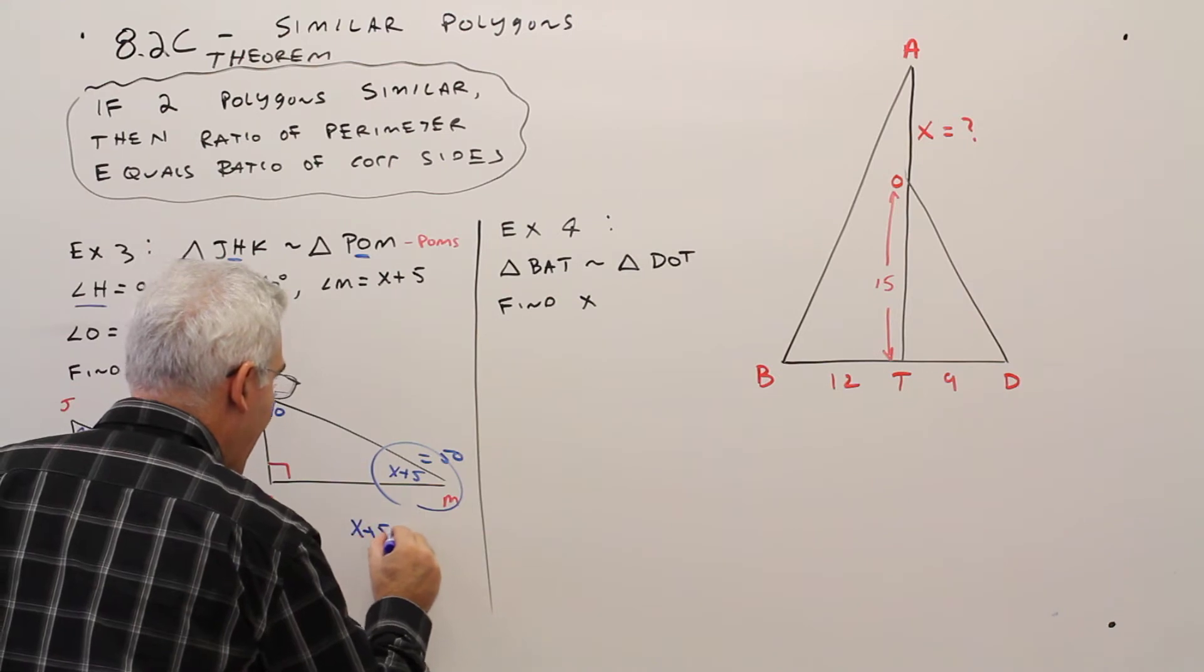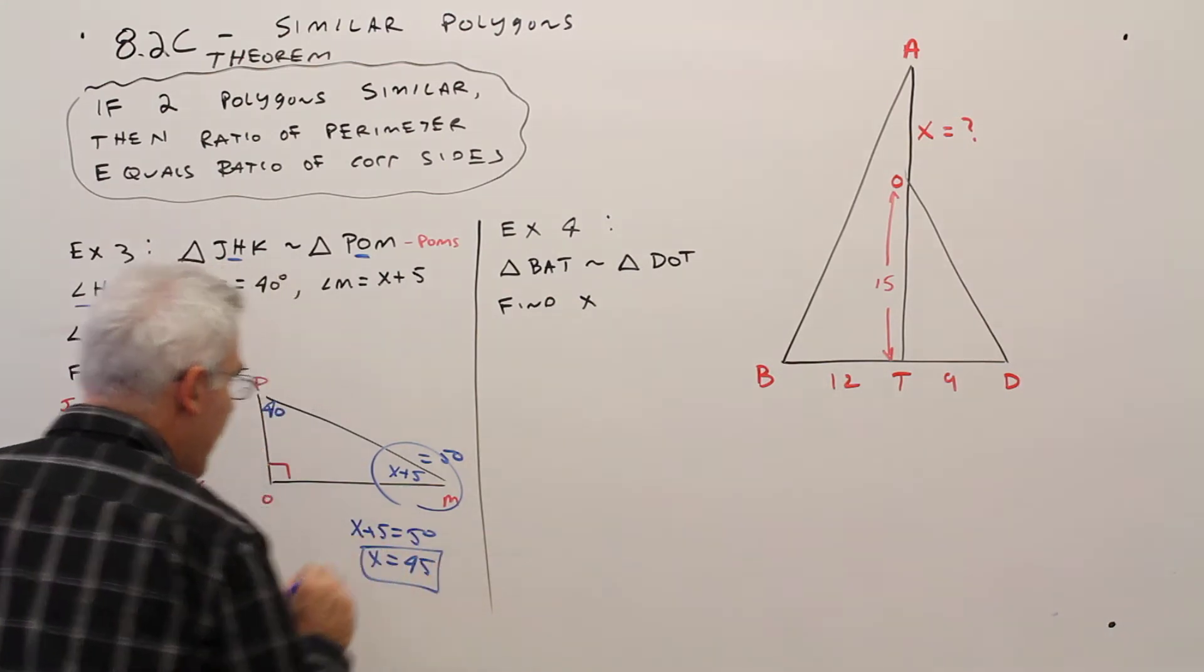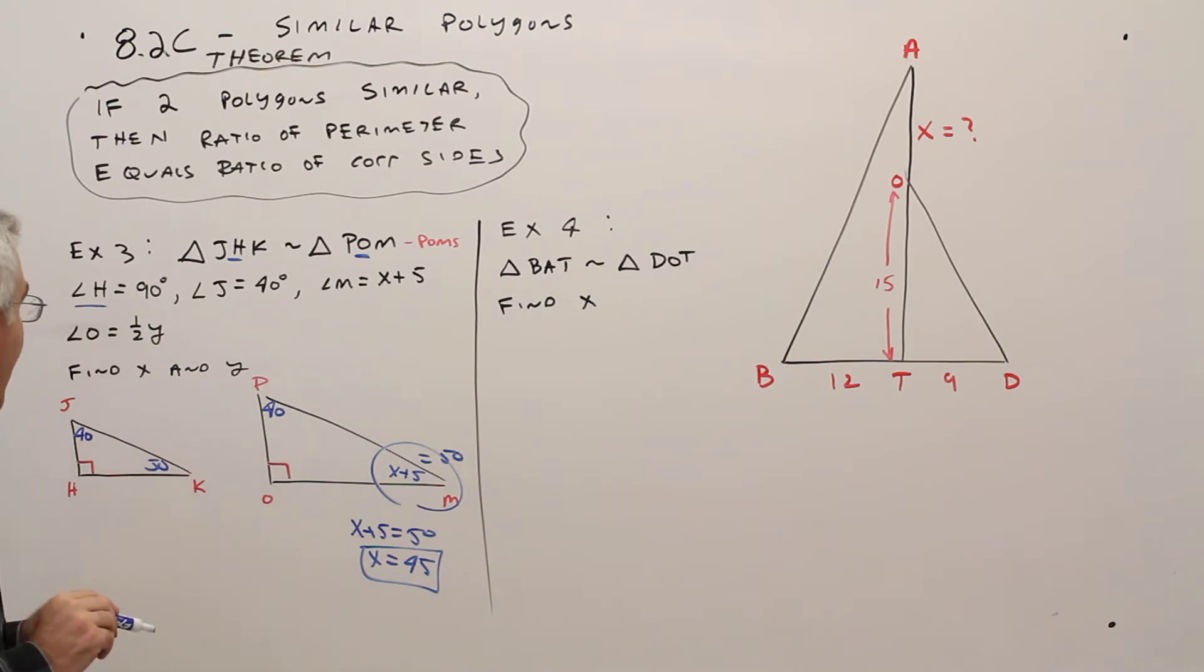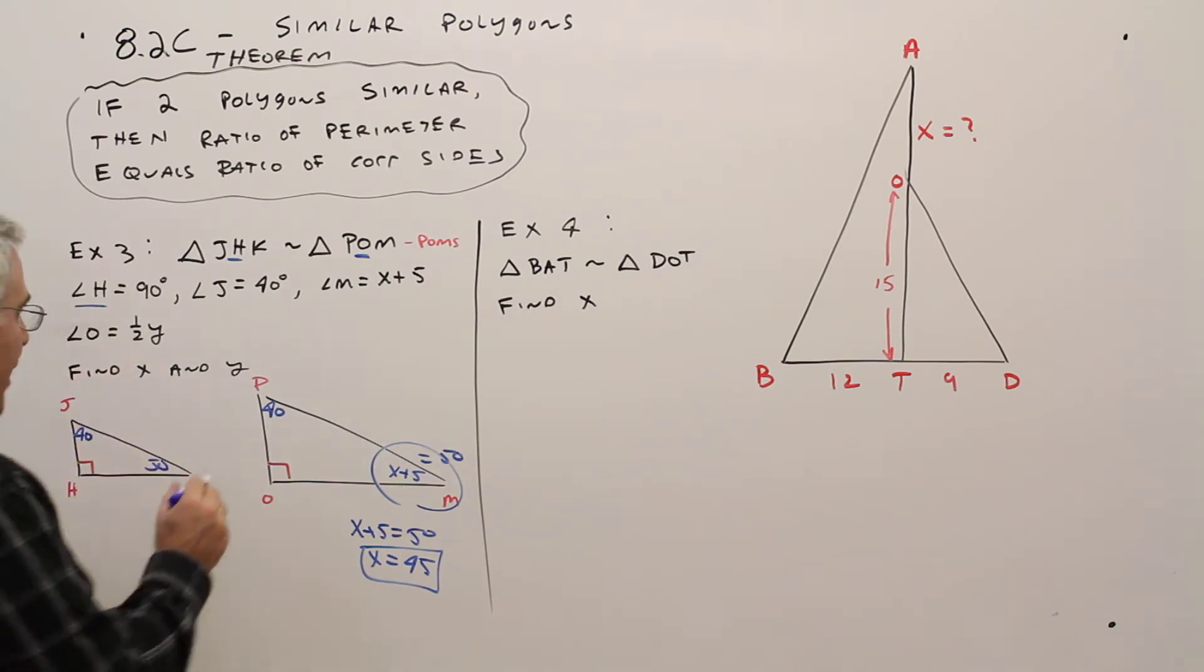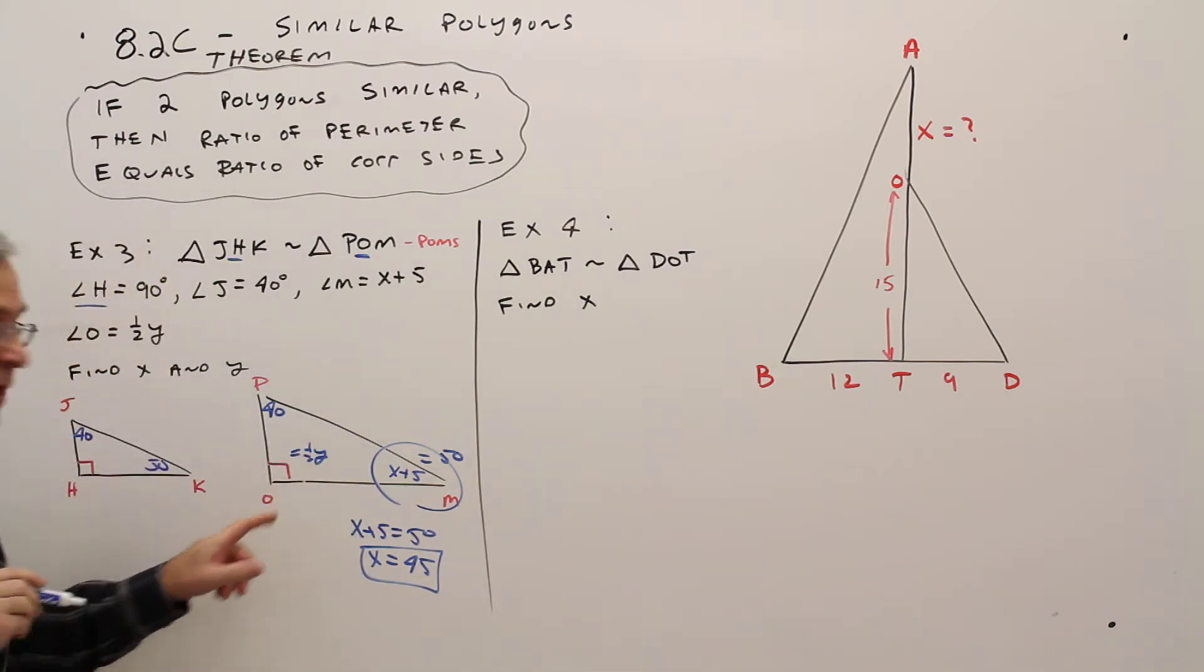So X plus 5 equals 50. X equals 45. They also wanted to find Y. They said O is one half Y. So one half Y equals 90.